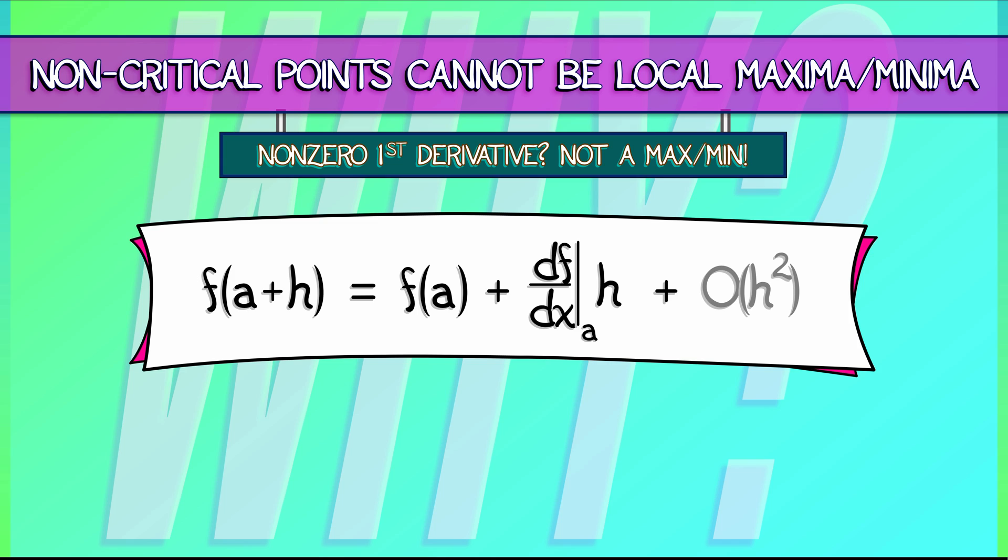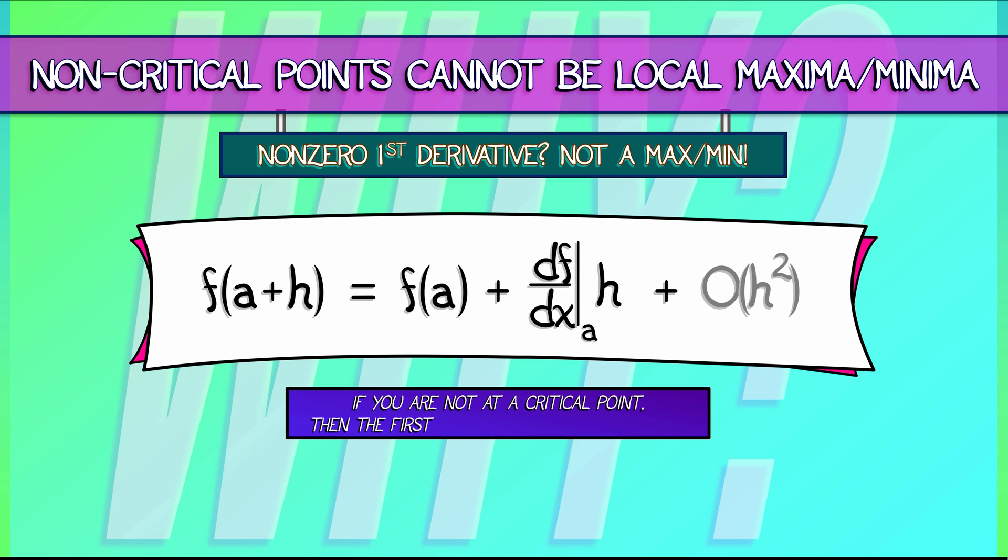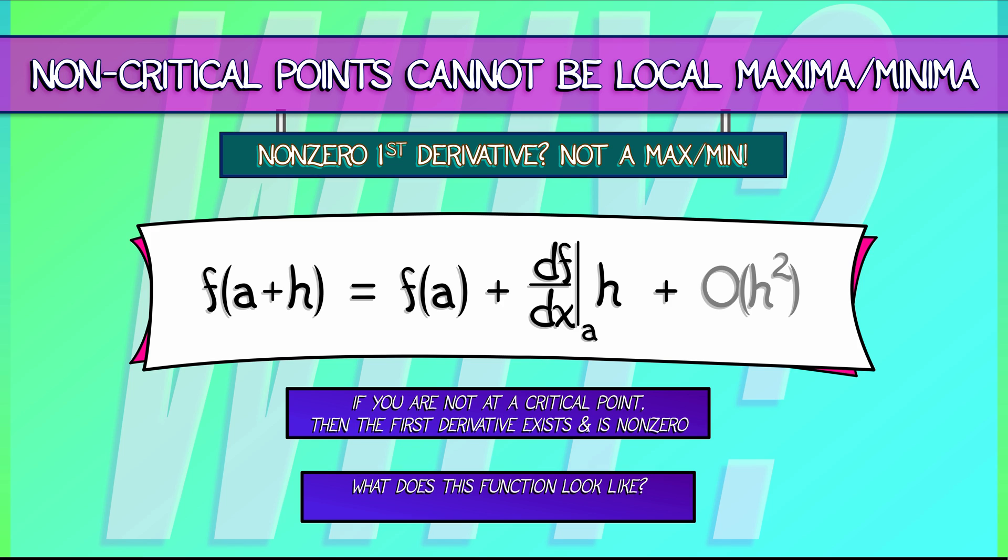Now, if you're not at a critical point, then the derivative exists, so this is valid. And that derivative is non-zero. That means that that linear term has a non-zero coefficient in front of it. And that means you are not a local max or a local min.